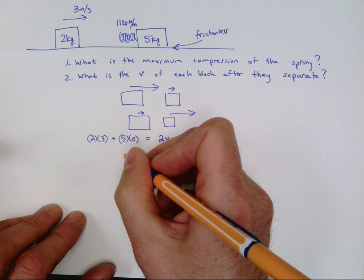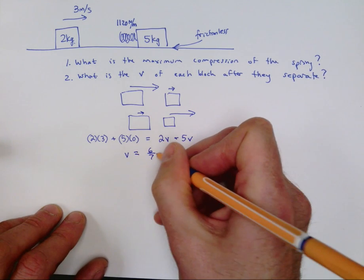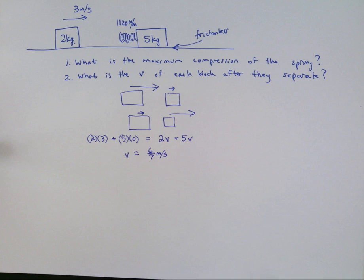So this is mathematically very easy. We end up with an answer of six sevenths meters per second. That's how fast they're going when they happen to be moving at exactly the same speed as one another.